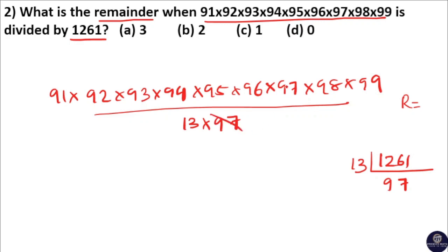Now 97 and 97 cancel. 13 goes 7 times in 91. That means the remainder is 0 here because this product is completely divisible by 1261. So option D is your answer.